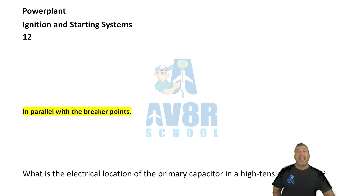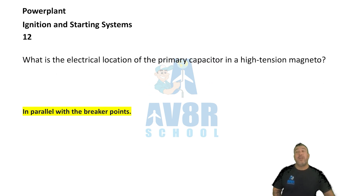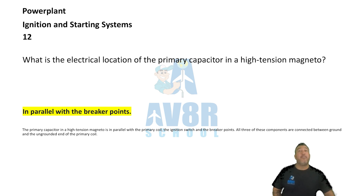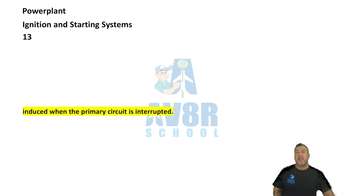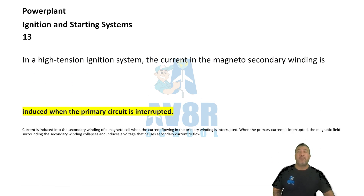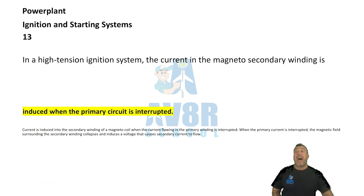Number twelve: In parallel with the breaker points. What is the electrical location of the primary capacitor in a high tension magneto? In parallel with the breaker points. Number thirteen: Induced when the primary circuit is interrupted. In a high tension ignition system, the current in the magneto's secondary winding is induced when the primary circuit is interrupted.